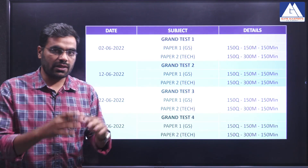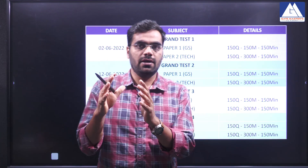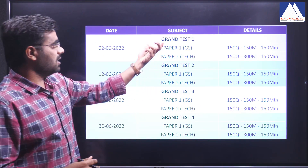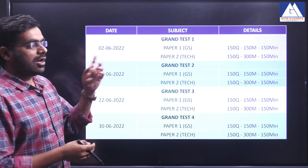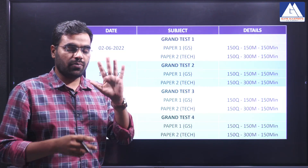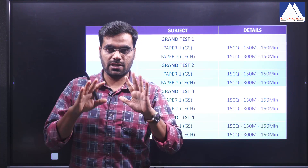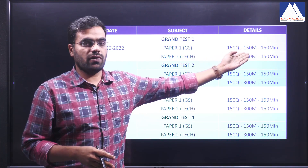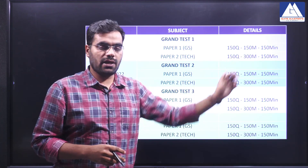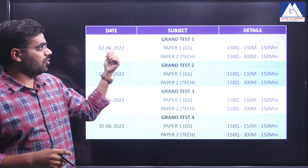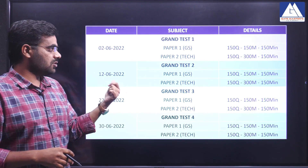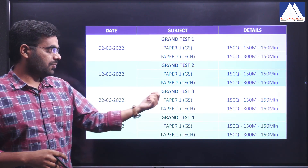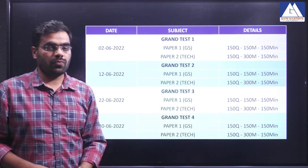Now let us go to the Grand Test. So far we have seen subject-wise Test 1, Test 2, and combo tests. Now we are seeing Grand Tests. We have a completely four grand tests. Same as TSPAC, AW exam pattern. Paper 1: GS — 150 questions, 150 marks. Paper 2: Technical — 150 questions, 300 marks. Grand Test 1 activates on 2nd June. Grand Test 2 on 12th June. Grand Test 3 on 22nd June. Grand Test 4 on 30th June.